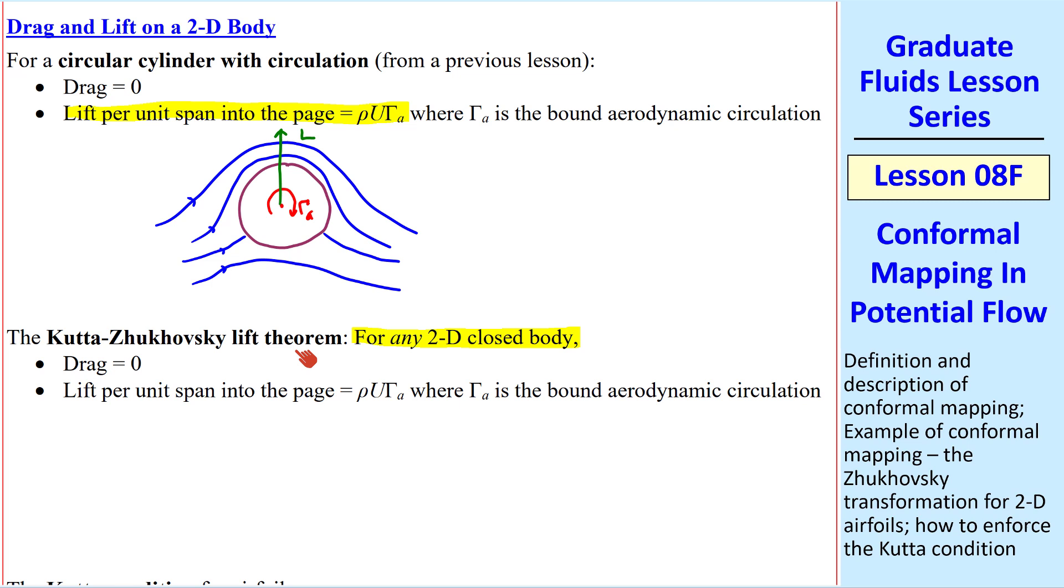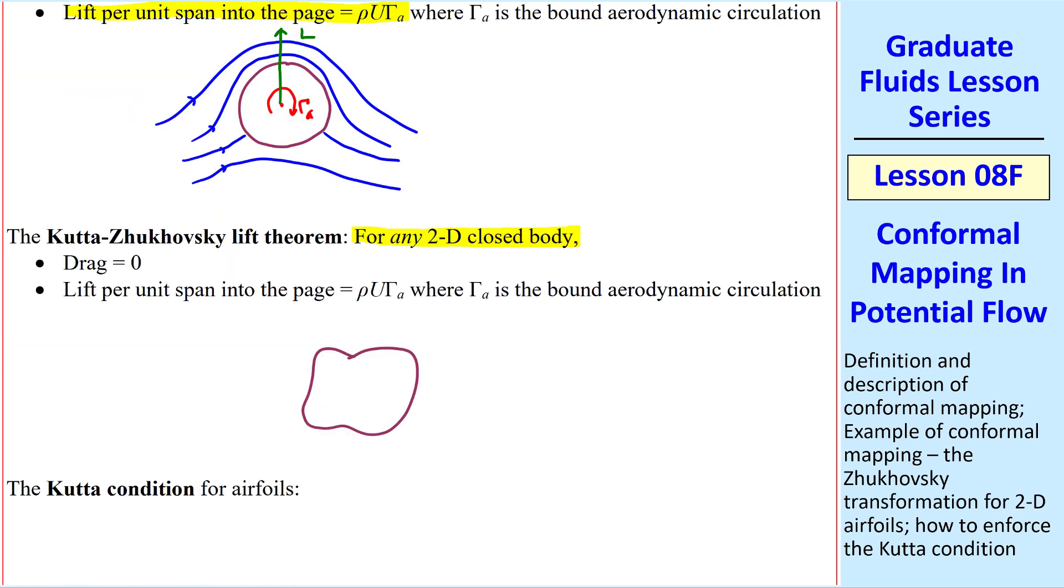This is the Kutta-Joukowsky lift theorem, that for any 2D closed body, drag is zero, and lift per unit span is rho U gamma A. Even for some arbitrary body with circulation added, the streamlines will look something like that, and again, you'll generate a lift per unit span as rho U gamma A.